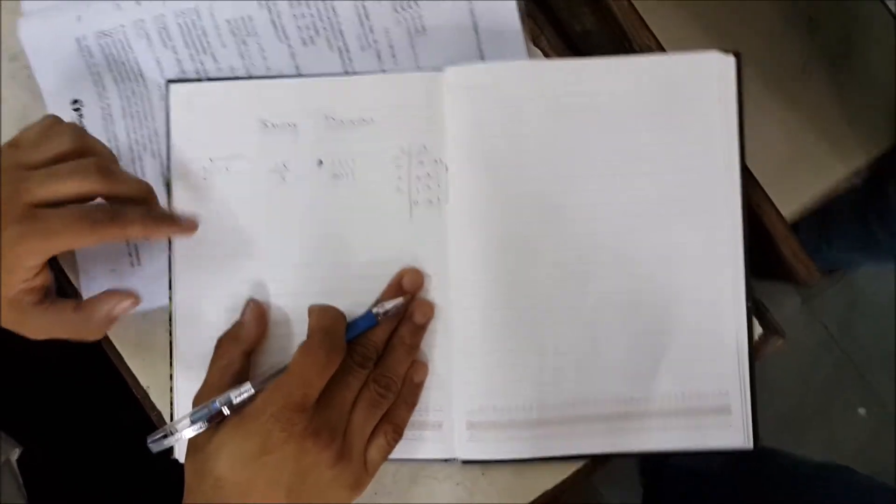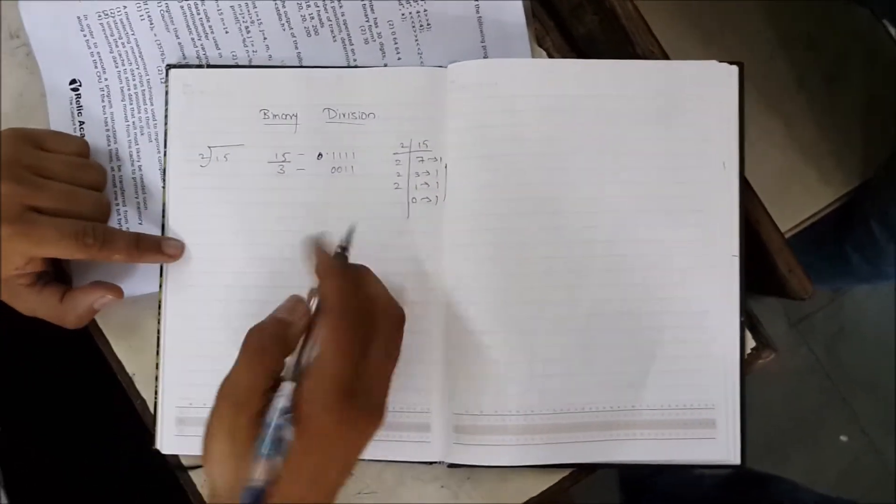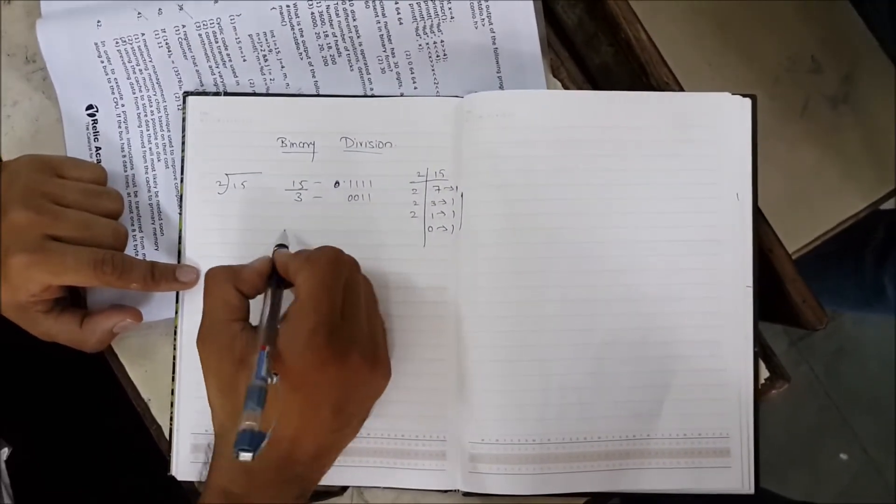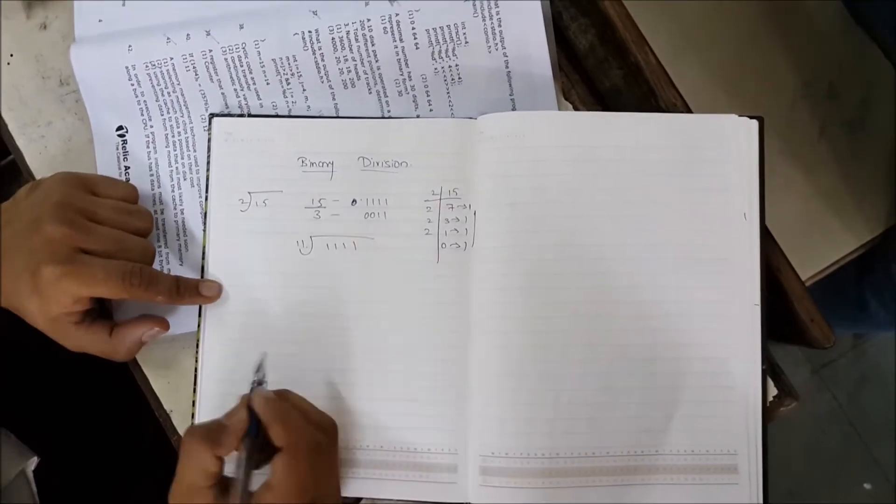These are four ones, 1111. And 3 is 0011. Now to find this division, you divide these four ones by two ones.